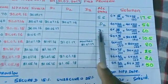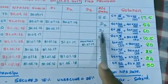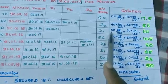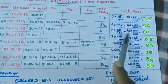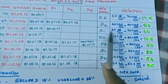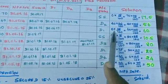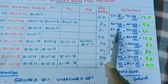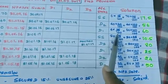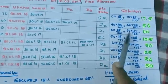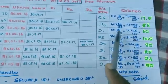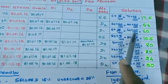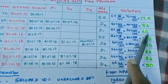A3 falls under D1 category. In A3, the secured portion is 0 and unsecured portion is 60. The provisioning norm for D1 is: secured portion 25% and unsecured portion 100%. So 0 × 25% plus 60 × 100% equals 60.